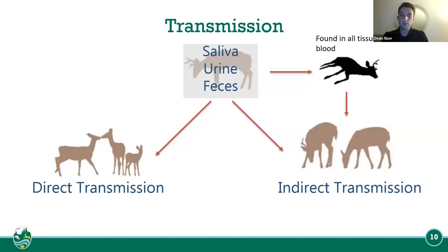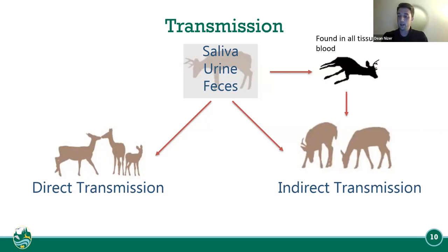Currently in Washington state you can bait animals for hunting. So if there's a salt lick or corn feeding the animals, saliva on that food can transfer the disease easily. Urine can also be a direct transmission route.